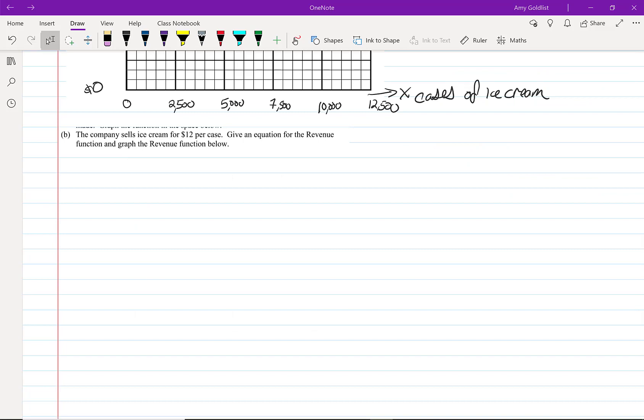Okay, part B. The company sells ice cream for $12 per case. Give an equation for the revenue function and graph the revenue below. Here, price.